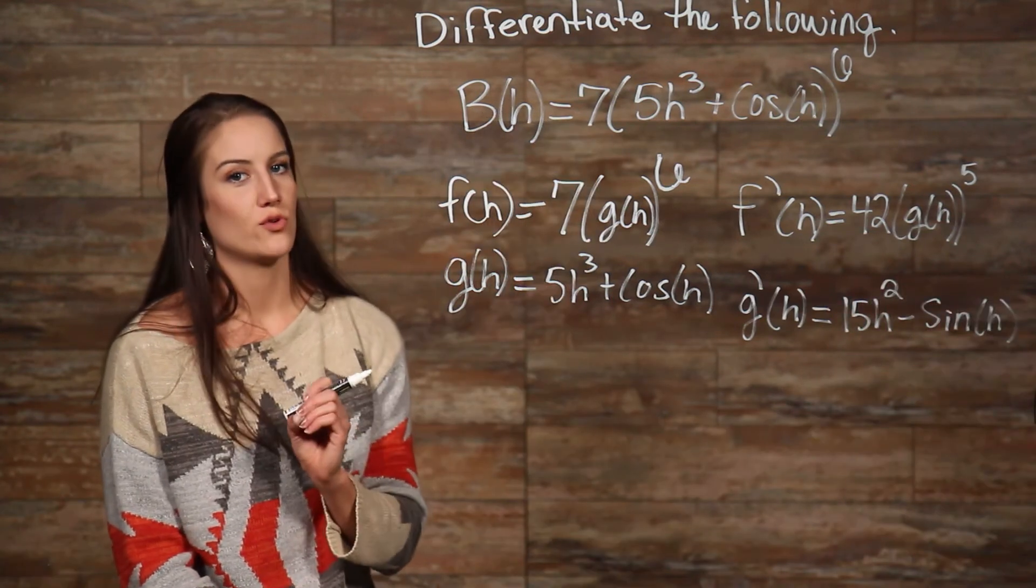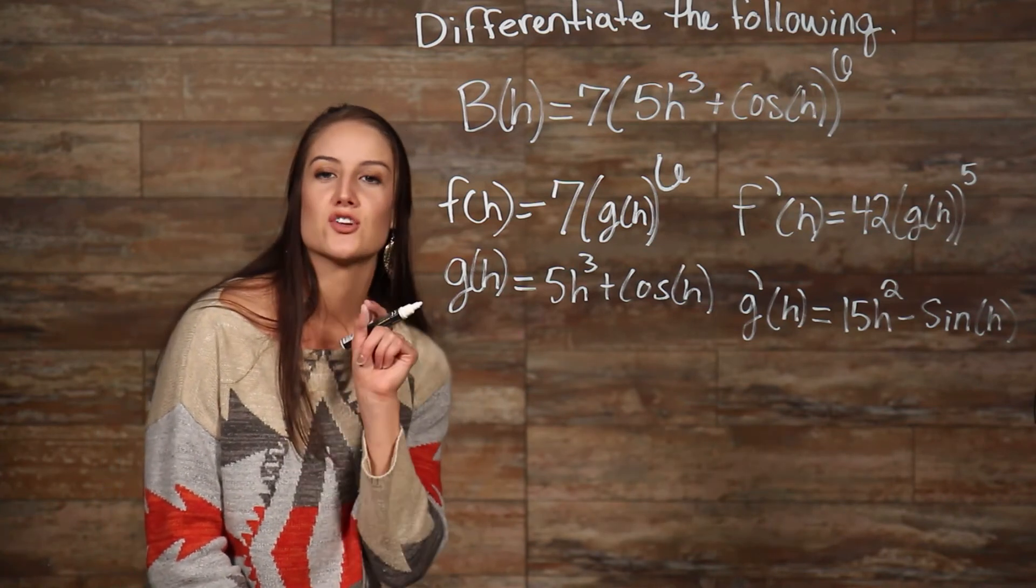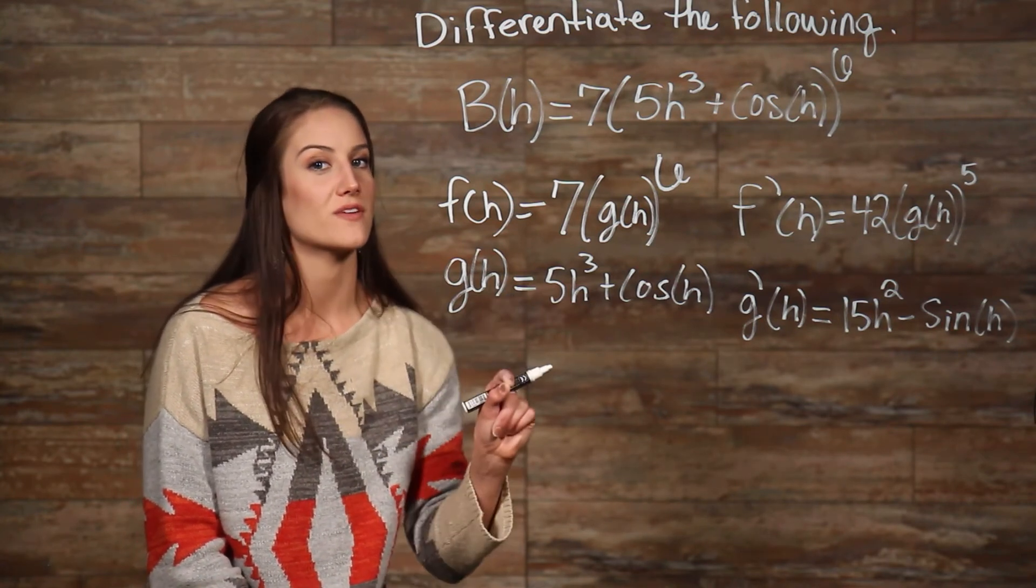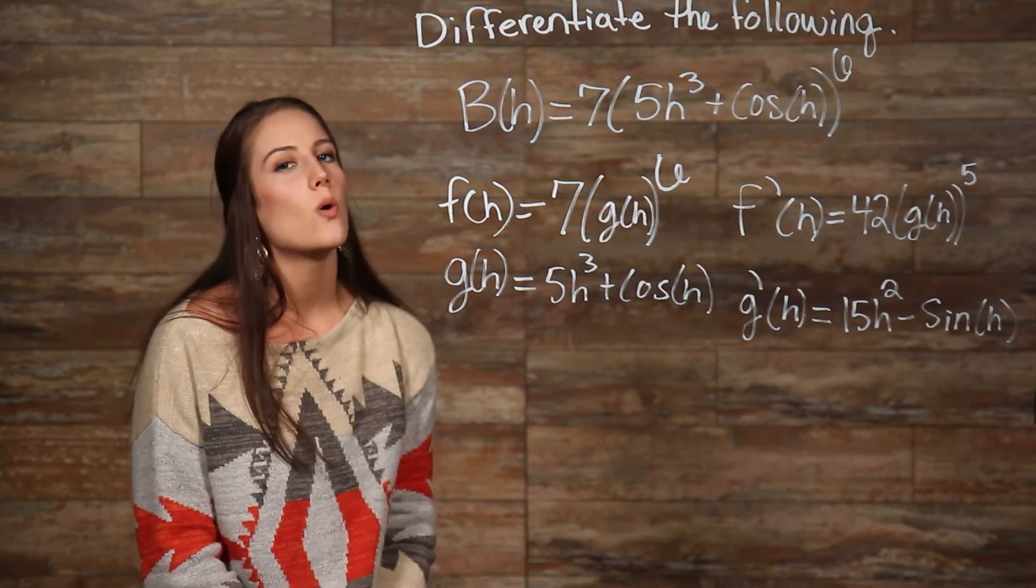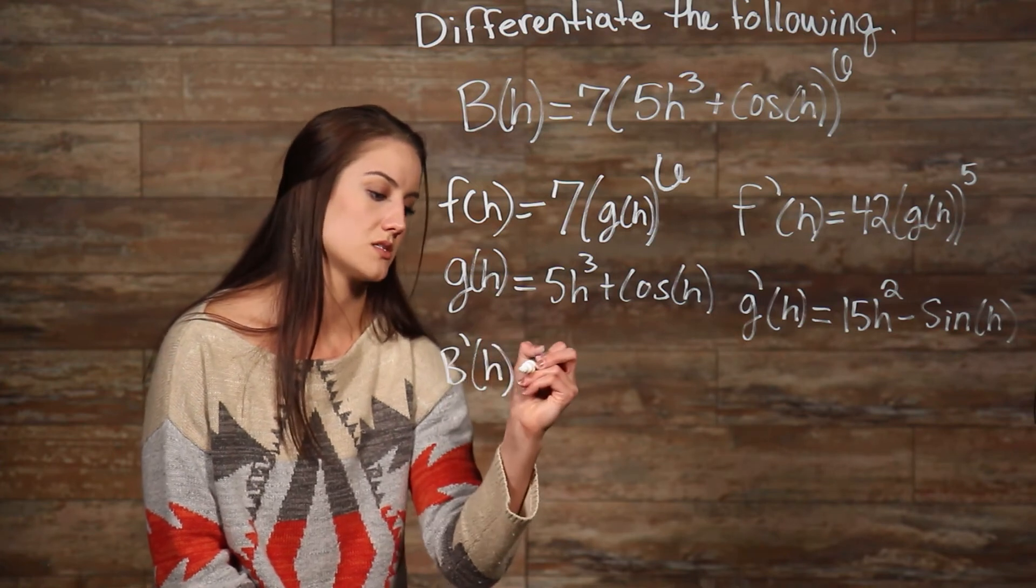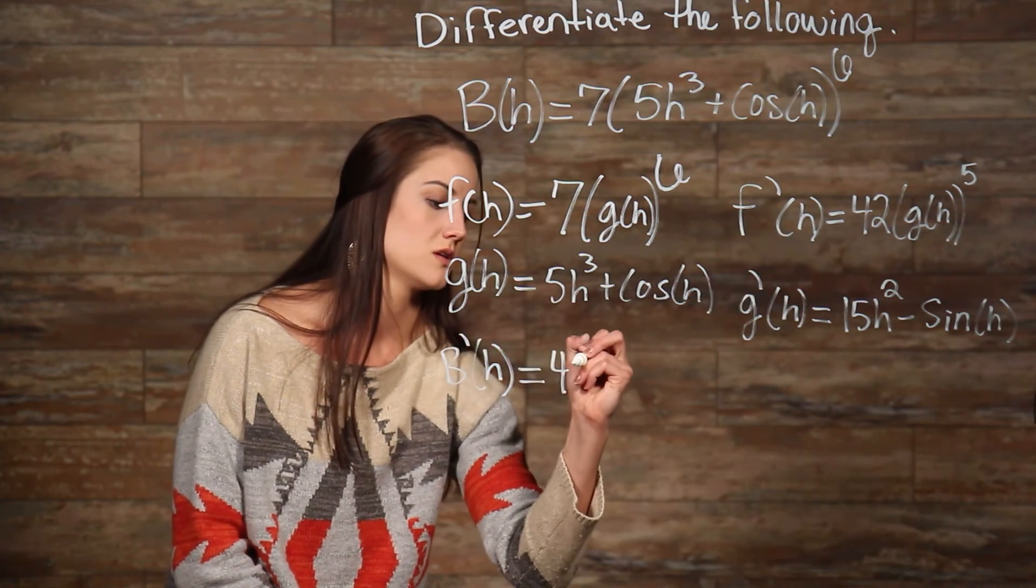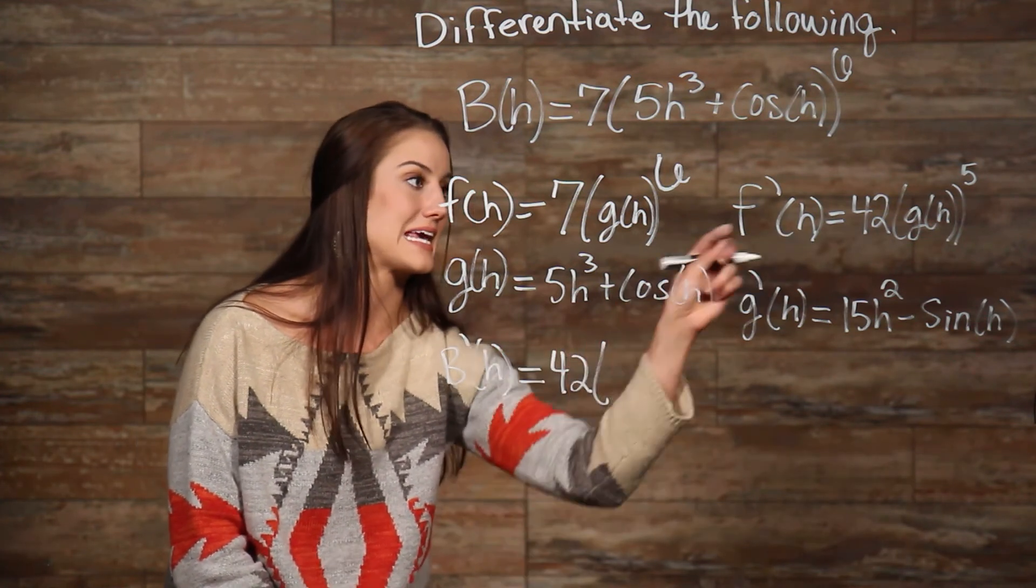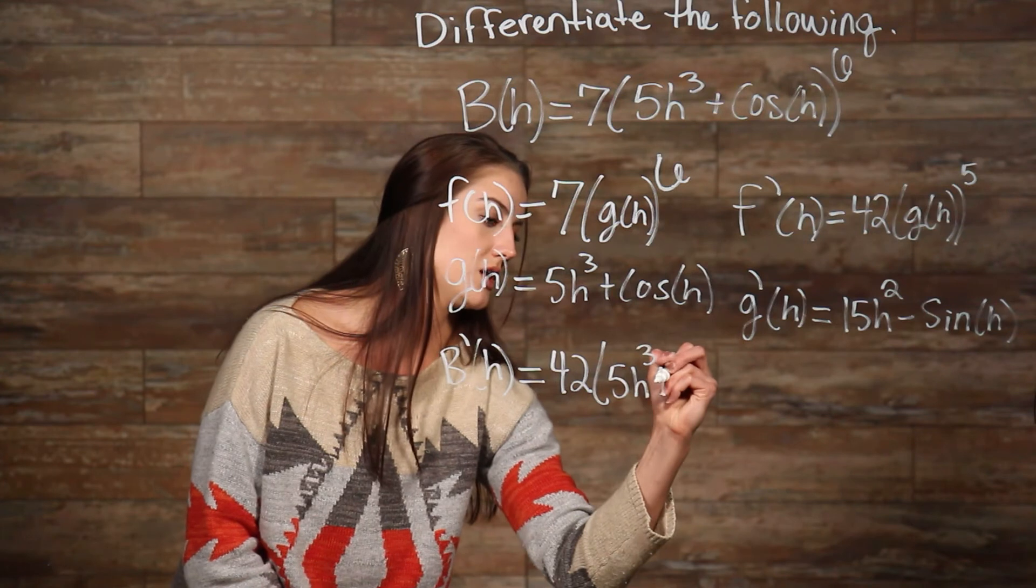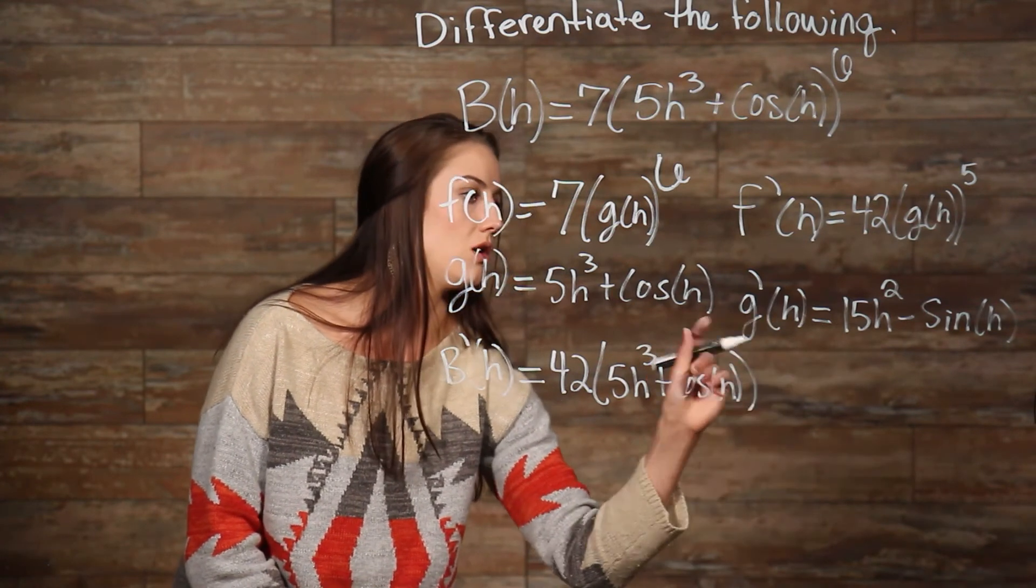We are now ready to use the chain rule. Another helpful way to think through how to use and apply the chain rule is this: the derivative of the outside function times the inside function left alone times the derivative of the inside function left alone, so that's 5h to the third plus cosine of h, all to the 5th power.